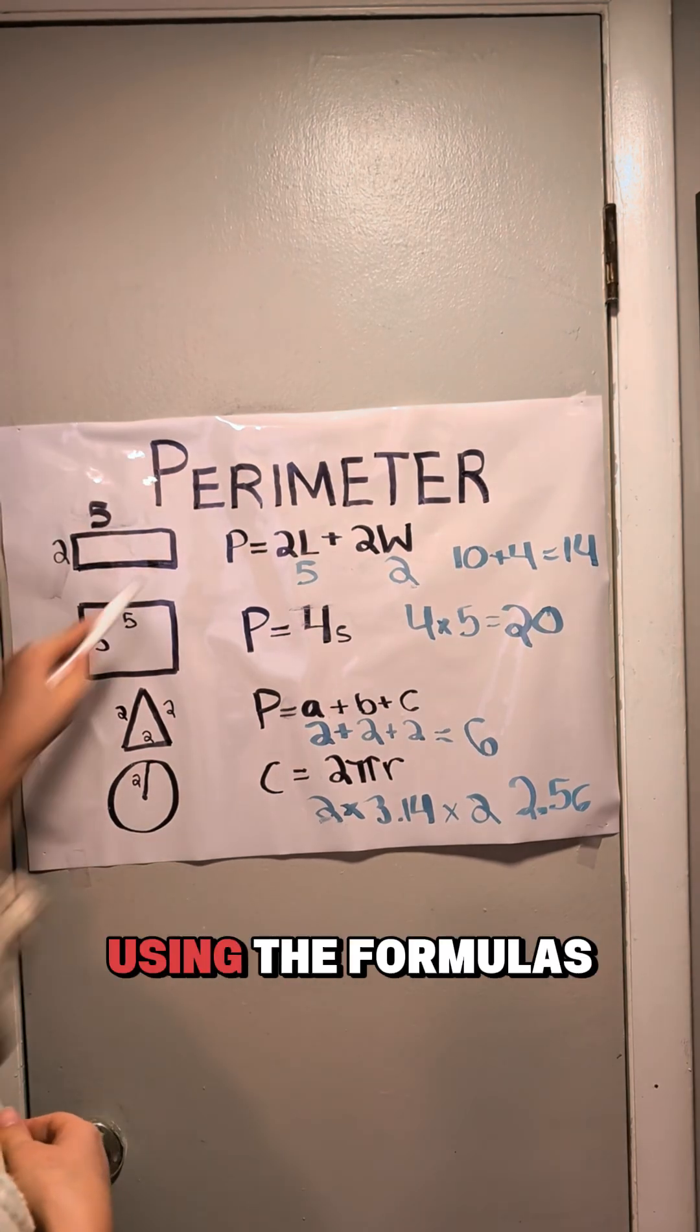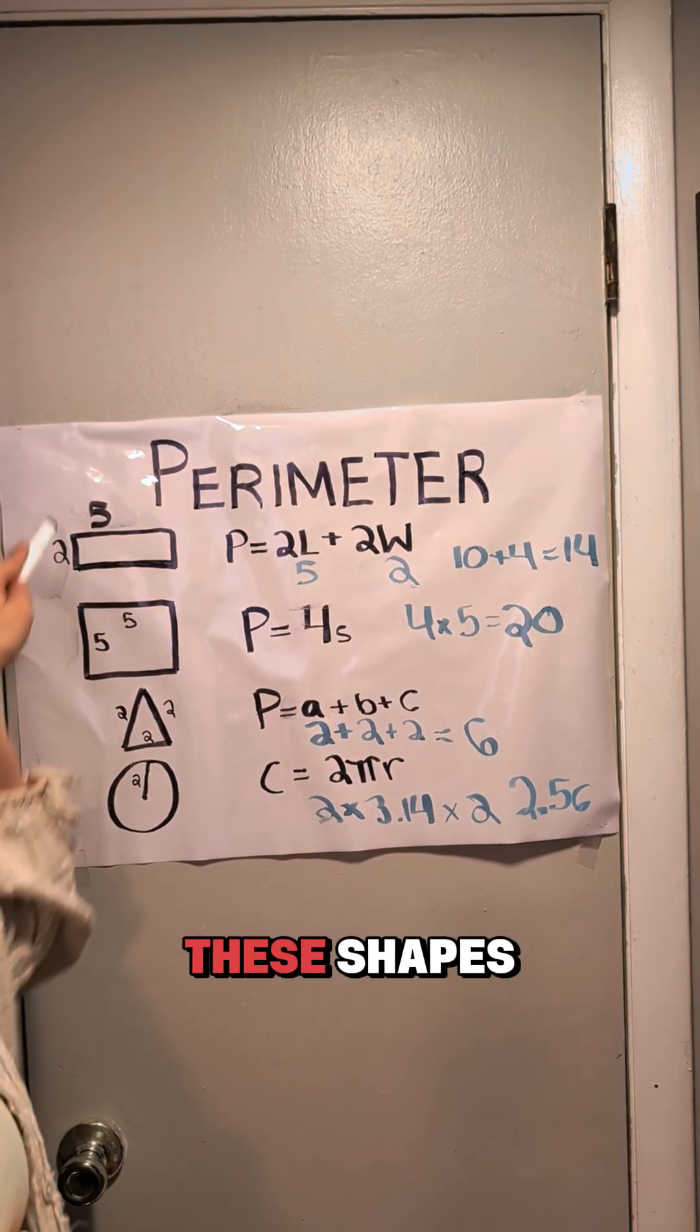Now you know how to find the perimeter using the formulas for all of these shapes.